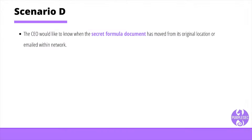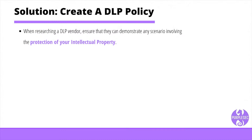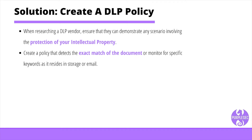Scenario D: The CEO would like to know when the secret formula document has moved from its original location or been emailed within the network. Solution — create a DLP policy. When researching a DLP vendor, ensure that you can demonstrate any scenario involving the protection of your intellectual property. Create a policy that detects the exact match of the document or monitor for specific keywords as it resides in storage or email.